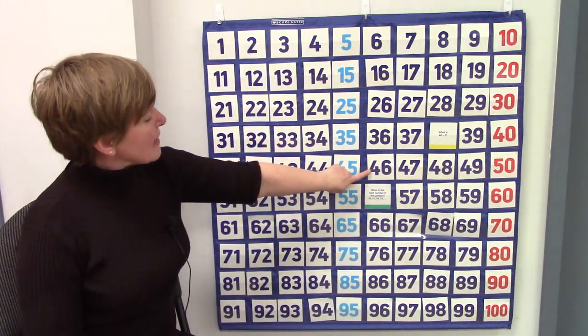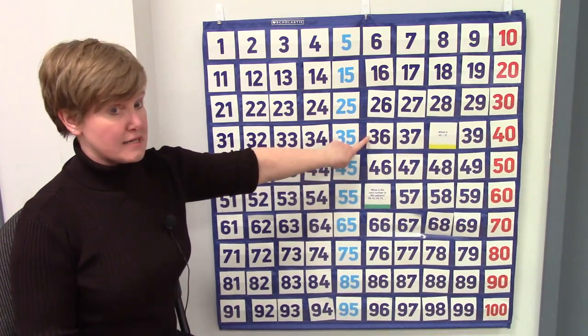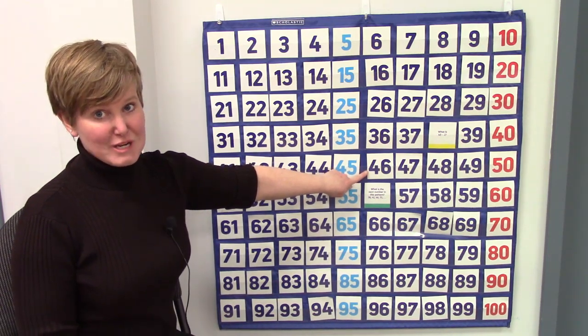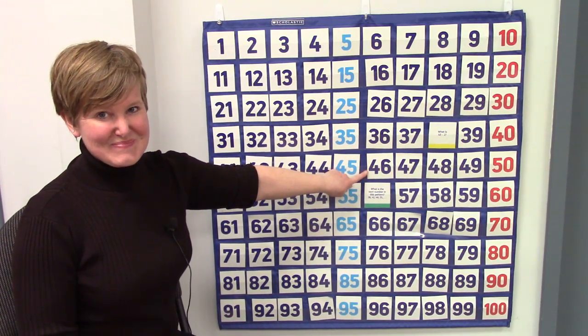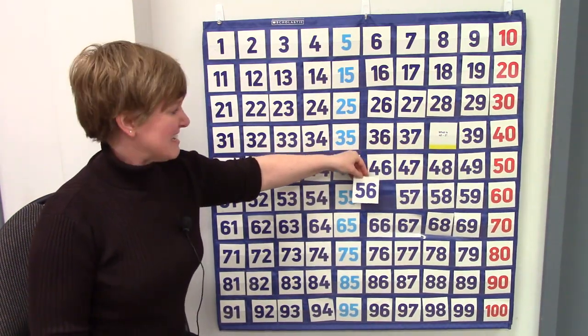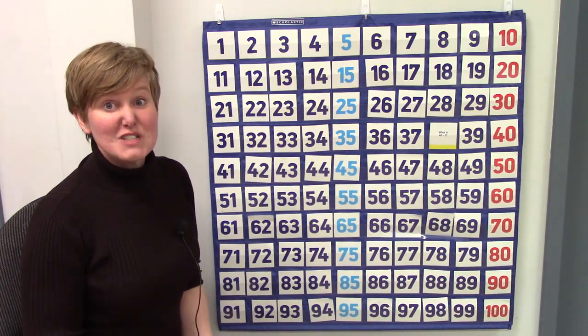Here we have the number 46. Now 10 less than 46 is 36. What would 10 more than 46 be? You're right. It would be 56. 46 plus 10 is 56.